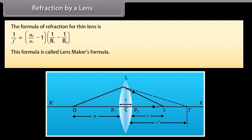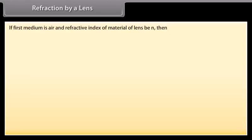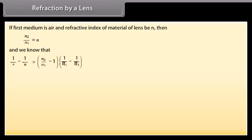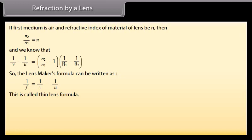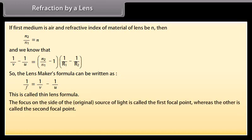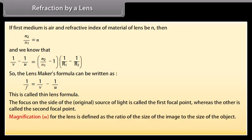The formula of refraction for a thin lens is called the Lensmaker's formula. This formula also holds for a concave lens. If the first medium is air and the refractive index of the material of the lens is N, then N2/N1 equals N. The lens maker's formula can then be written as the thin lens formula. The focus on the side of the source of light is called the first focal point, whereas the other is called the second focal point. Magnification M for the lens is defined as the ratio of the size of the image to the size of the object: M = h′/h = v/u.